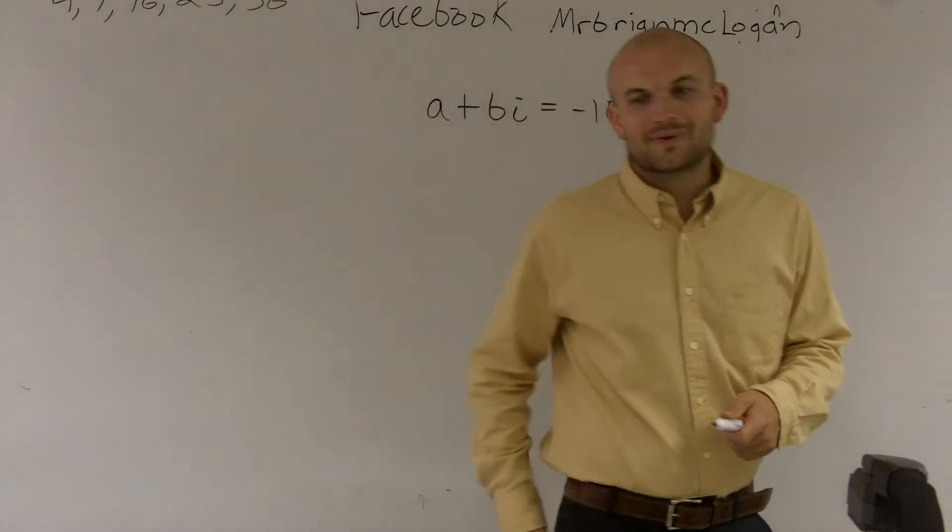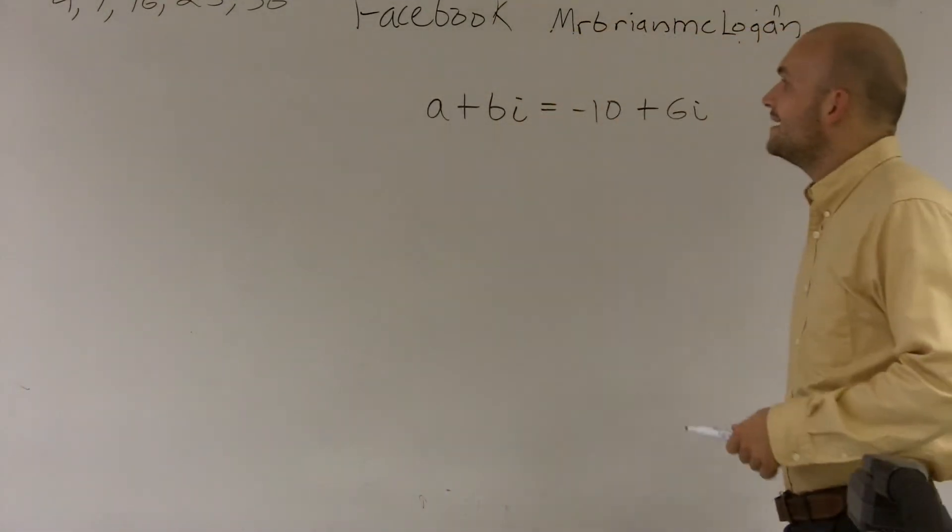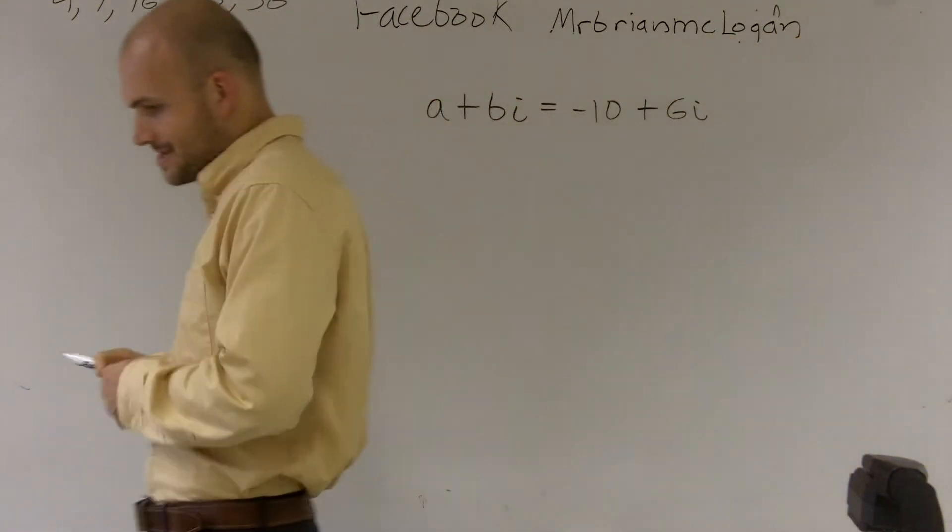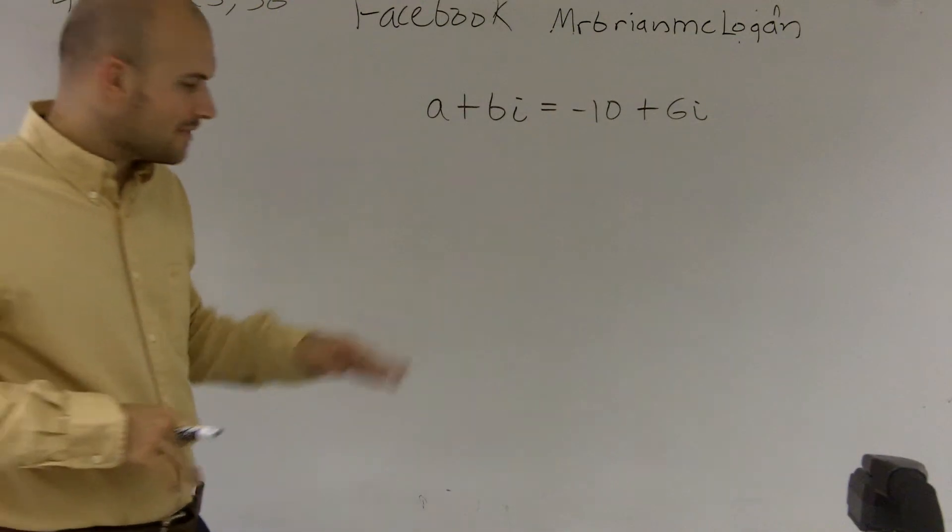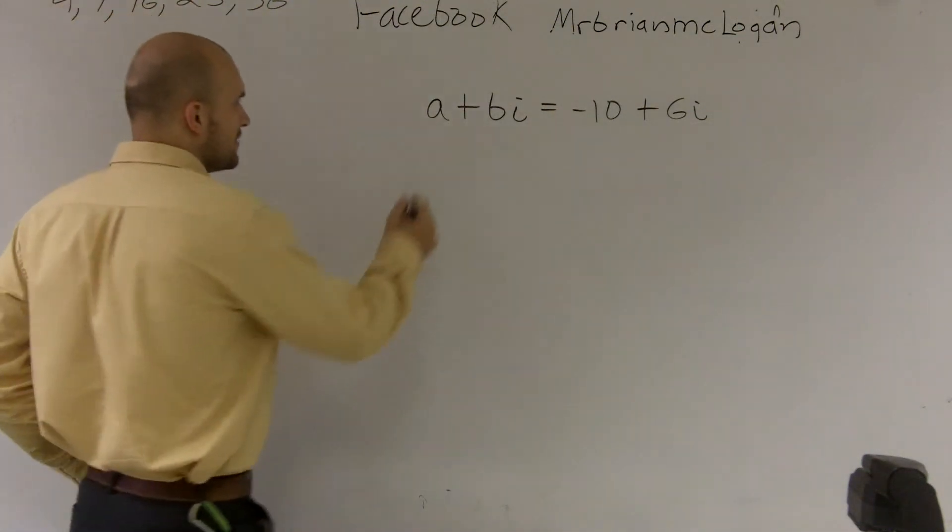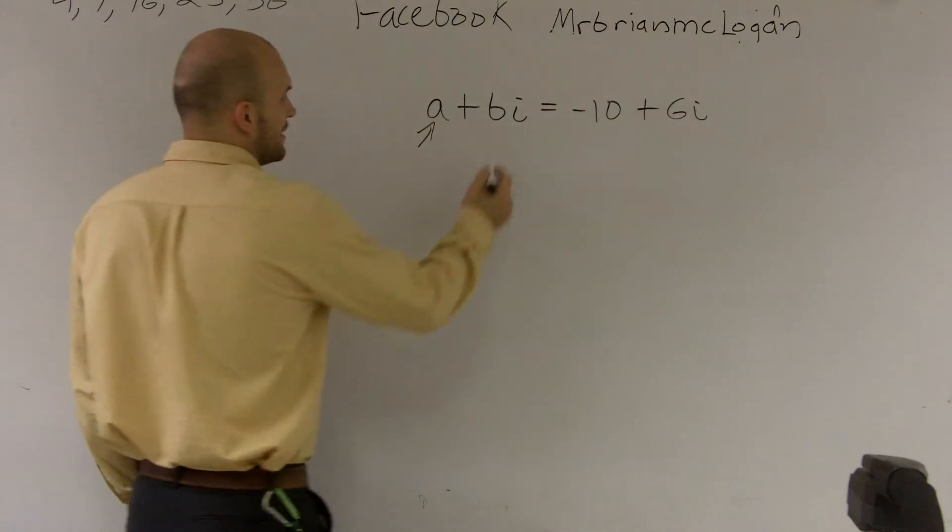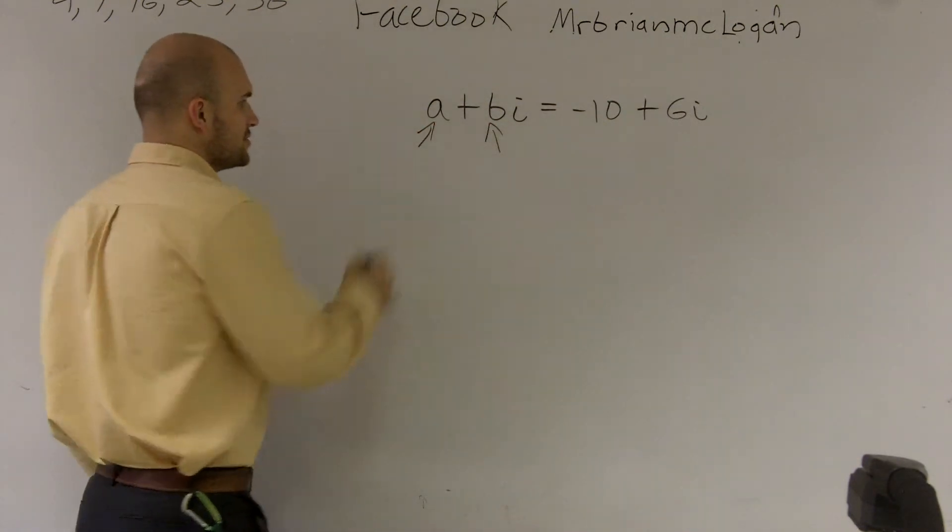All right, what we're going to do is work on some real and imaginary numbers. This is what we'll call the standard form of an imaginary number: A plus BI, where this is your real part and that's your imaginary.